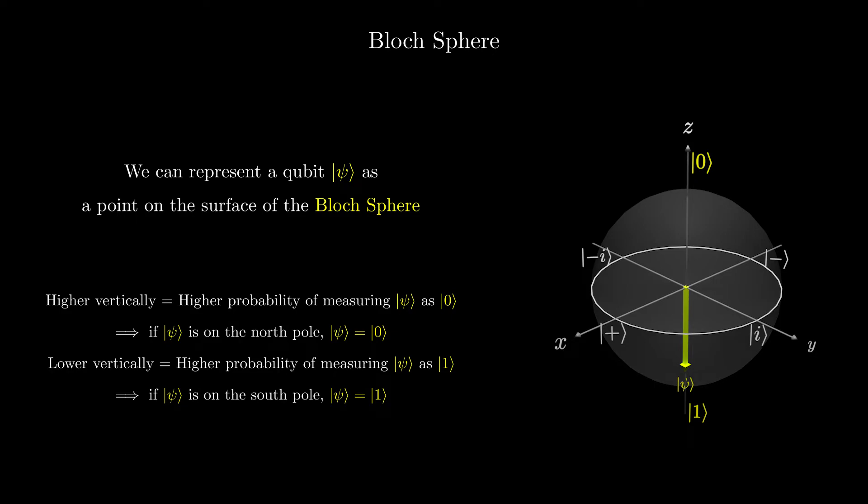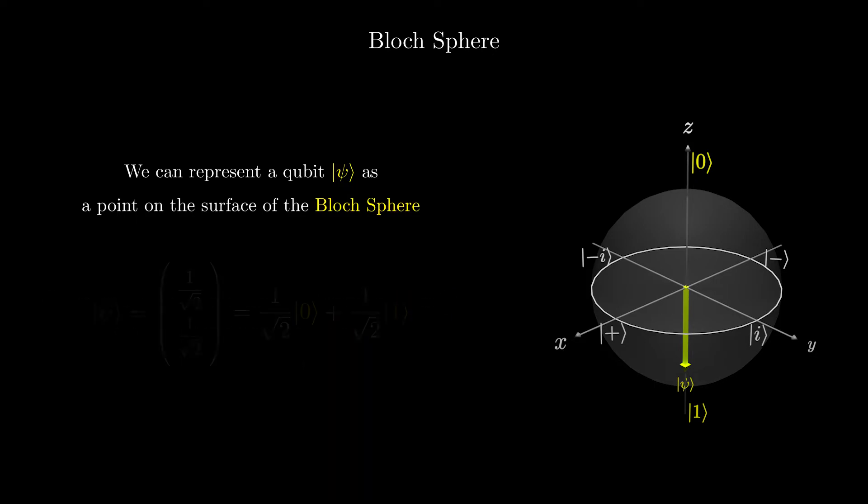That means that if we have the state 1/√2, 1/√2, it will lie halfway between the north and south poles, since it has an even chance of being measured as zero or one.